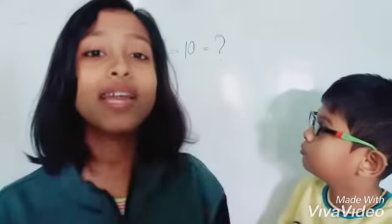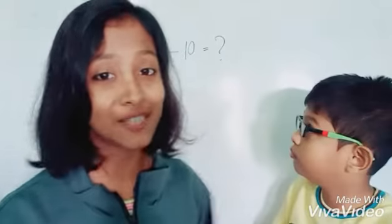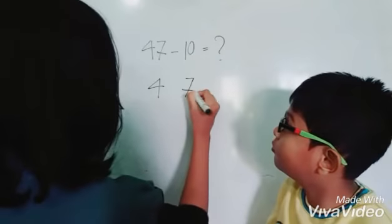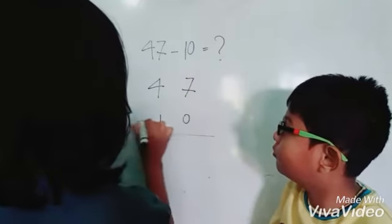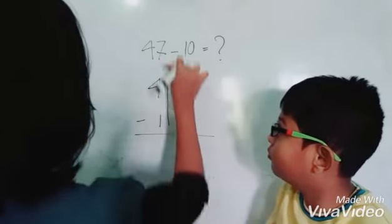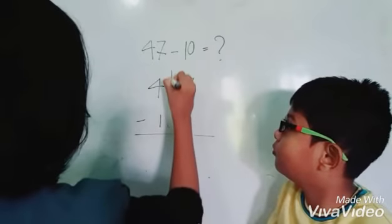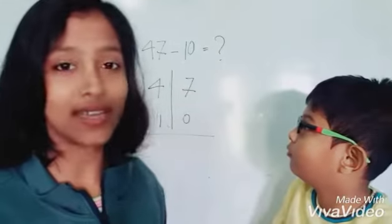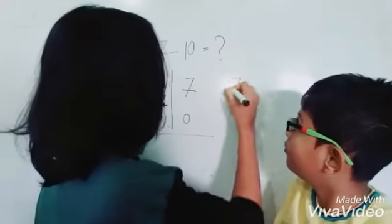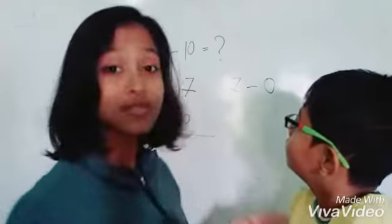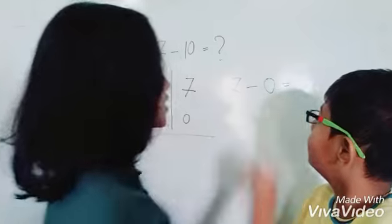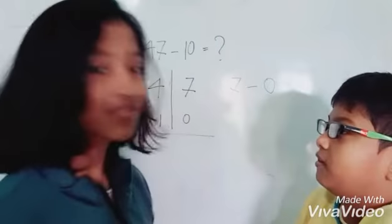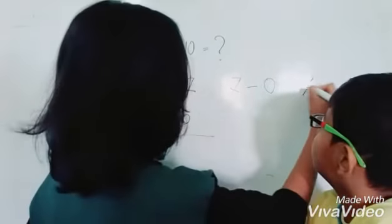First, line up the numbers vertically in each place. Now, calculate the ones place. That is, if we subtract 0 from 7. Thurston, can you tell us, if we subtract 0 from 7, then what's the answer? 7.